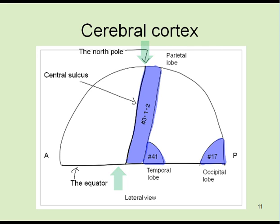This is the primary sensory cortex for body information of parietal lobe or Brodmann's area 3-1-2. This is the primary sensory cortex for visual information of occipital lobe or area 17. This is the primary sensory cortex for auditory information of temporal lobe or area 41.